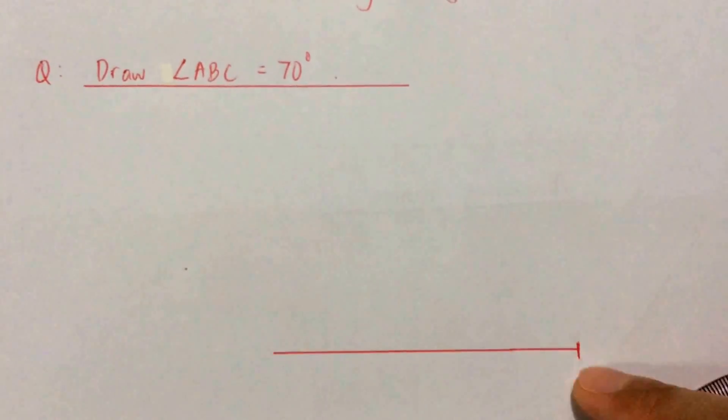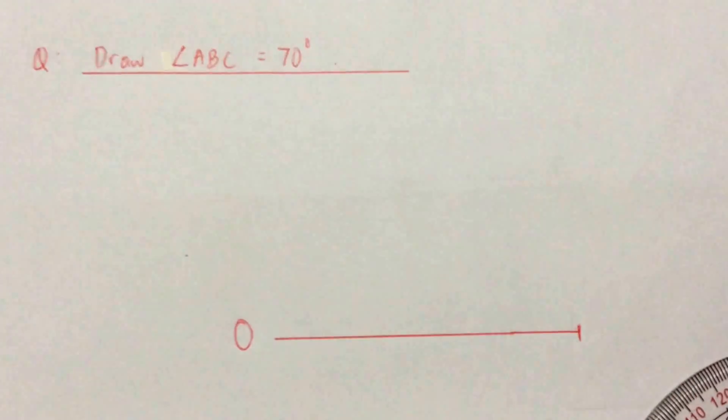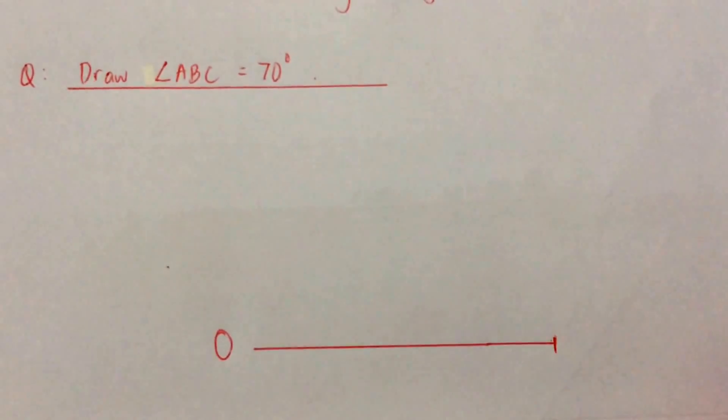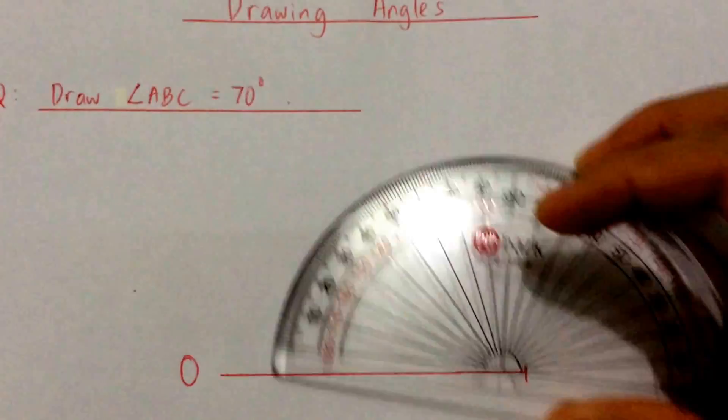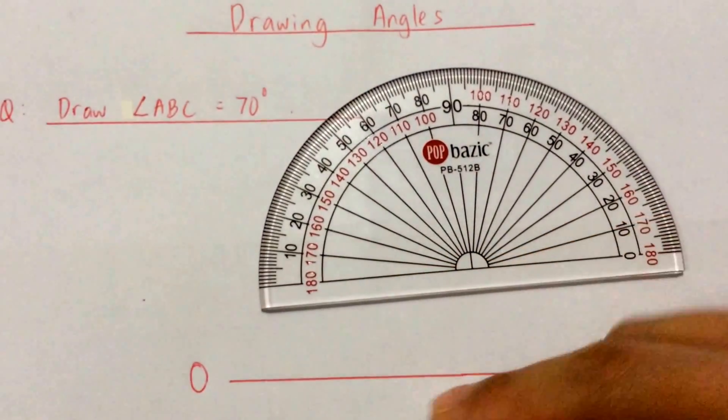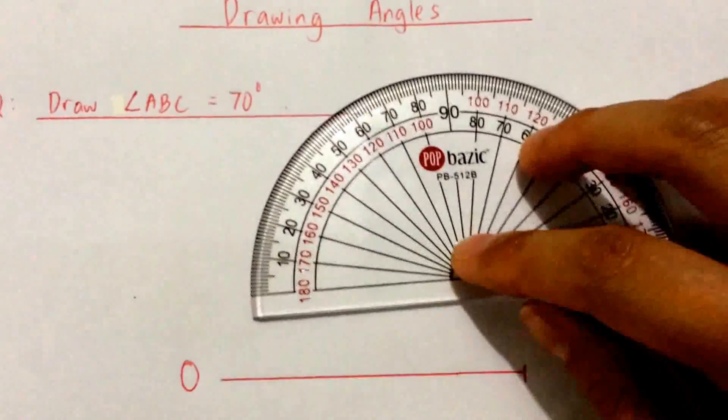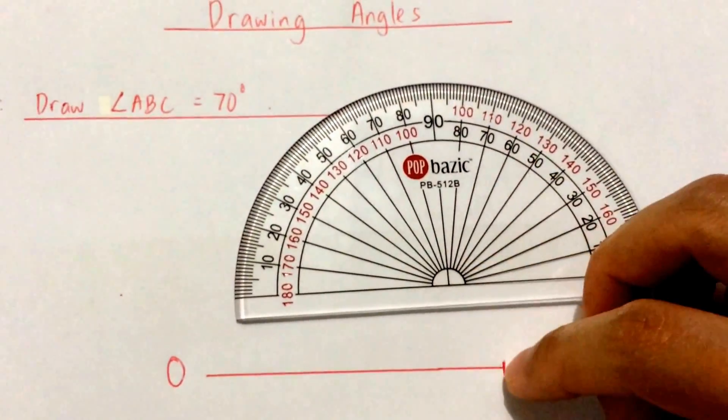Now this is your line zero. Okay, now I'm going to put my protractor on this line. In my previous video where I taught you how to measure angles, I told you that this black line must rest on the red line and this point must be touching this point.